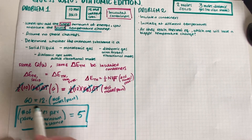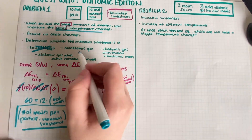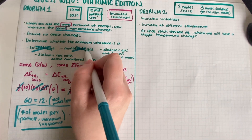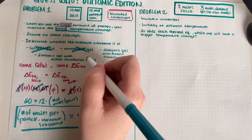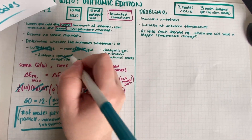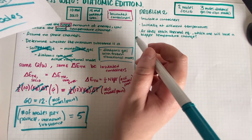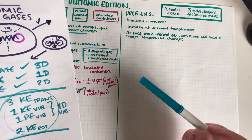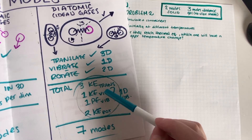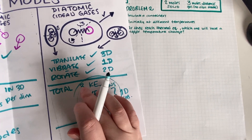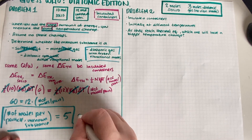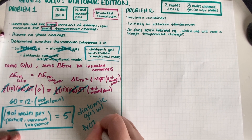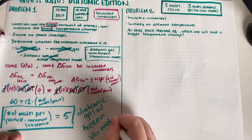A solid or liquid has 6 modes — not possible. A monatomic gas has 3 modes — not possible. A diatomic gas with all modes active has 7 modes — not possible. A diatomic gas has a total of 7 modes, two of which are vibrational. If those two vibrational modes are inactive (frozen), that leaves 5 modes. So the final answer is that the unknown substance is a diatomic gas with frozen vibrational modes.